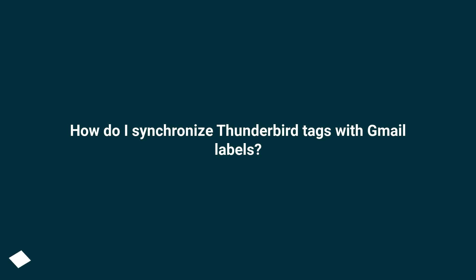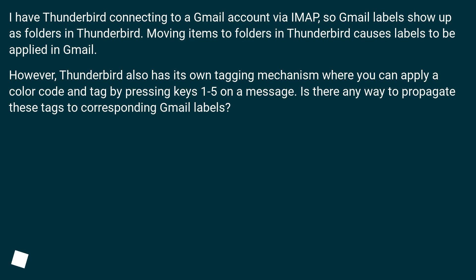How do I synchronize Thunderbird tags with Gmail labels? I have Thunderbird connecting to a Gmail account via IMAP, so Gmail labels show up as folders in Thunderbird. Moving items to folders in Thunderbird causes labels to be applied in Gmail. However, Thunderbird also has its own tagging mechanism where you can apply a color code and tag by pressing keys 1 to 5 on a message. Is there any way to propagate these tags to corresponding Gmail labels?